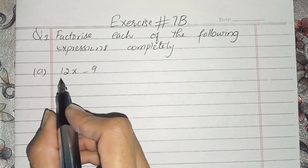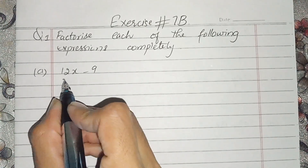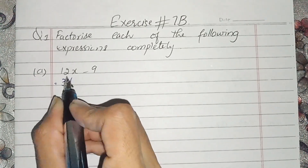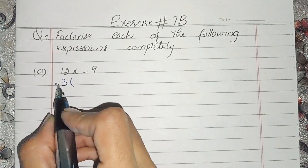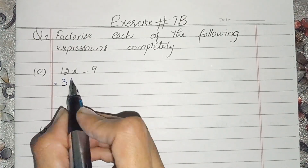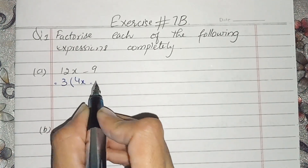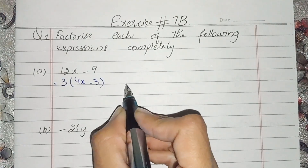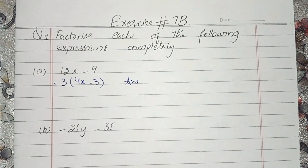If we look here, 3 is common. Because in the table of 3, both 12 and 9 appear. So 3 is the common factor taken out, and left is 4x minus 3. And students, this is the answer. Very simple question.